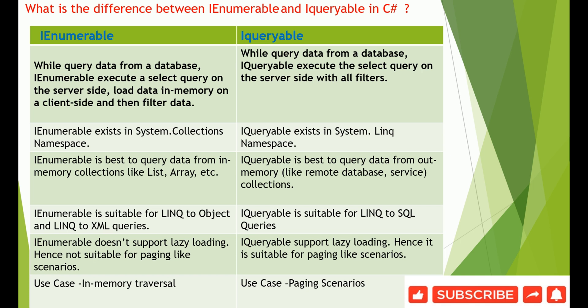Hello everyone. In this video we'll discuss the difference between IEnumerable and IQueryable in C#. The basic difference is the way each one operates and manipulates data. IEnumerable is the base interface of IQueryable, meaning IQueryable inherits IEnumerable, so all features of IEnumerable apply to IQueryable, but the basic operation — the way it manipulates data — is different.